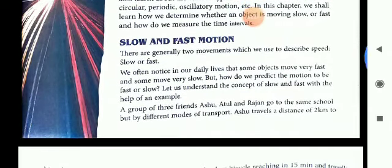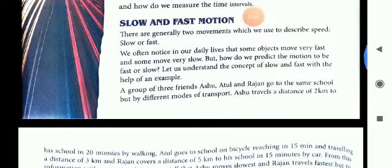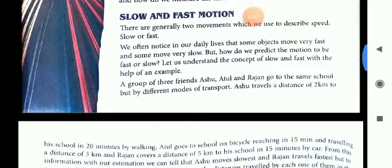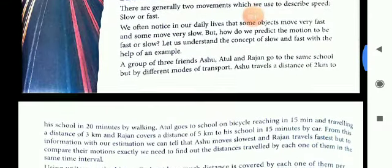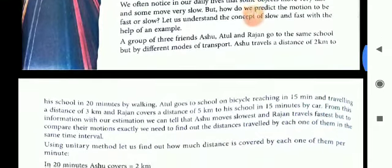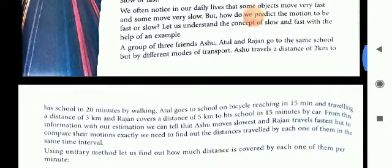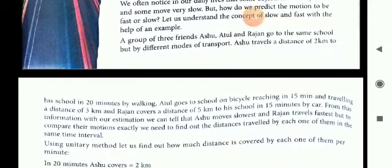So two types of motion are there: slow and fast motion. If the object takes more time to cover up a given distance then it is known as slow motion. And if the distance is covered in less time then it is fast motion. See here it can be understood by the given example.